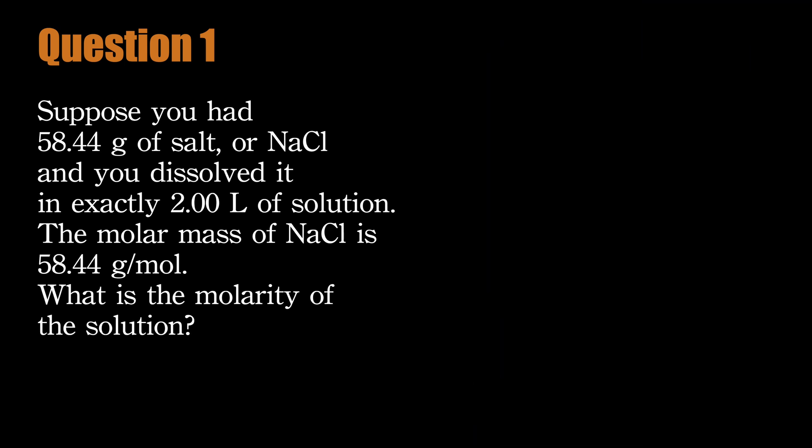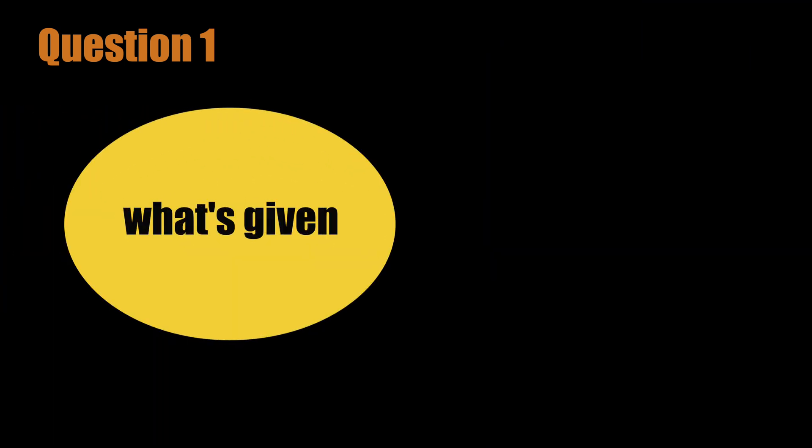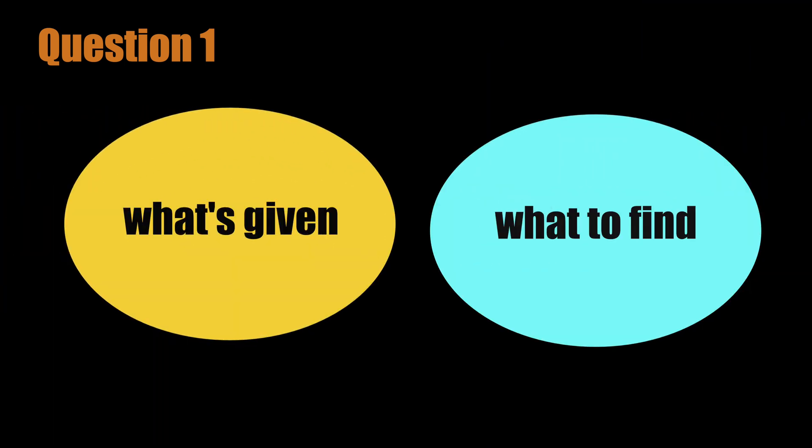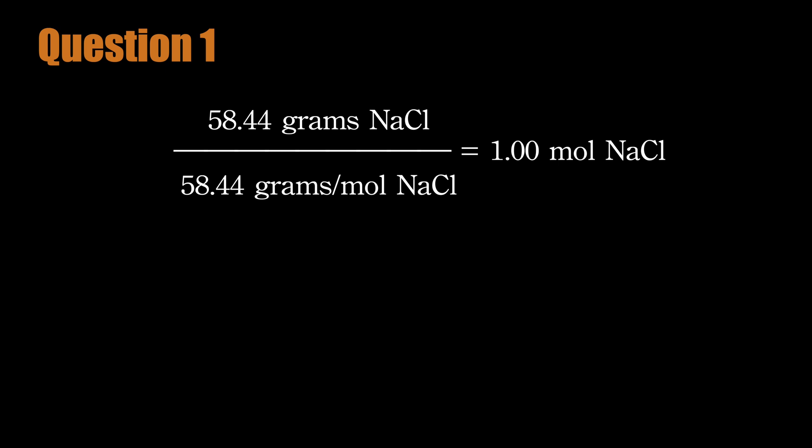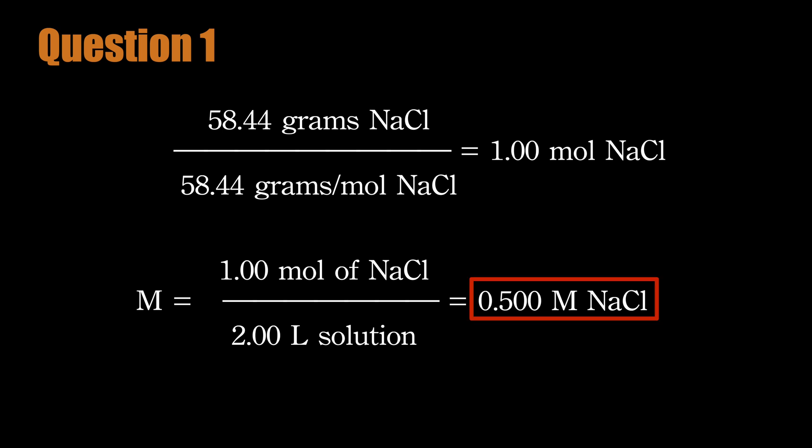To solve the problem, first we have to identify the given information and then identify what the problem is asking us to find. We know the mass of the solute, the molar mass of the solute, and the volume of the solution. First, convert the mass of NaCl to the number of moles. Next, divide the number of moles by the volume of the solution to get its molarity.